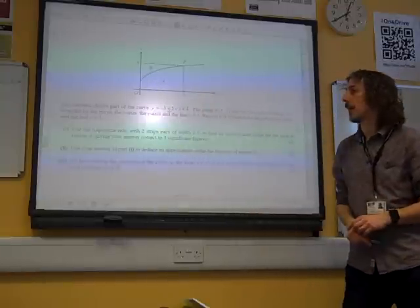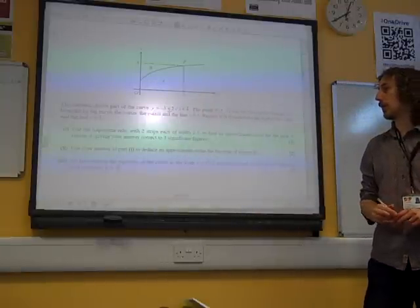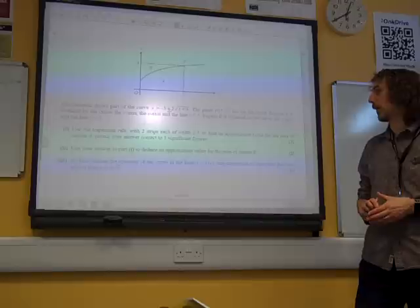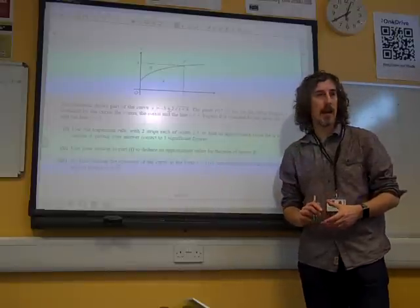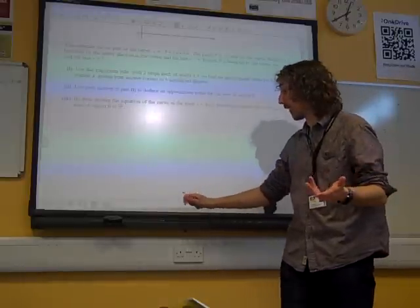Use the Trapezoidal rule with two strips, each with 2.5, to find the possible value for the area of region A. Trapezoidal rule, we know how to do this.